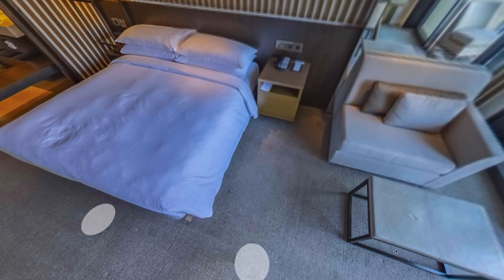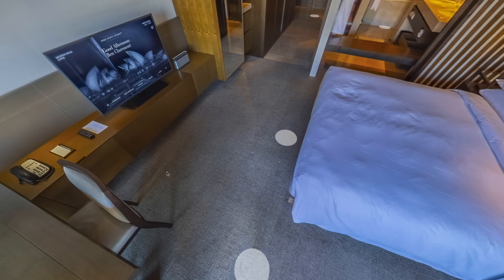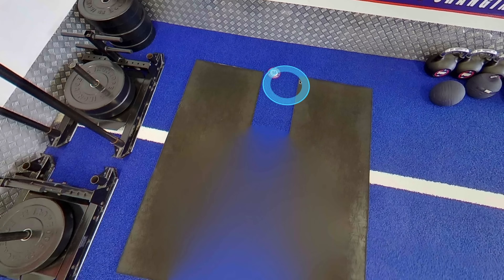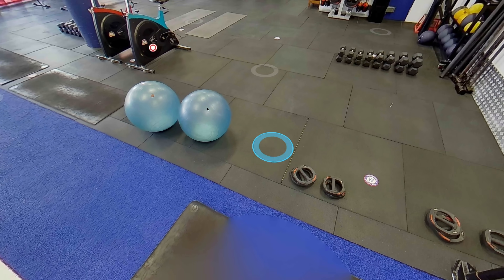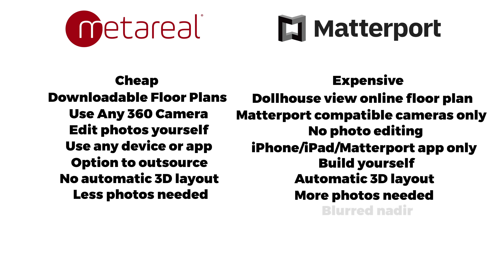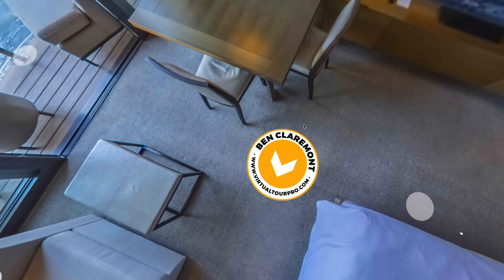With Metareal you need fewer photos overall to create a nice-looking 3D dollhouse - literally only one 360 per room. Because you do the 3D mapping yourself and put all the geometry together afterward, you get accuracy without needing to overshoot. Matterport requires more shots per location so the camera physically sees everything. Another thing I prefer about Metareal is they don't automatically blur the nadir like Matterport does - Matterport has always blurred the tripod shot without giving you the option to add a logo or simply not blur it.